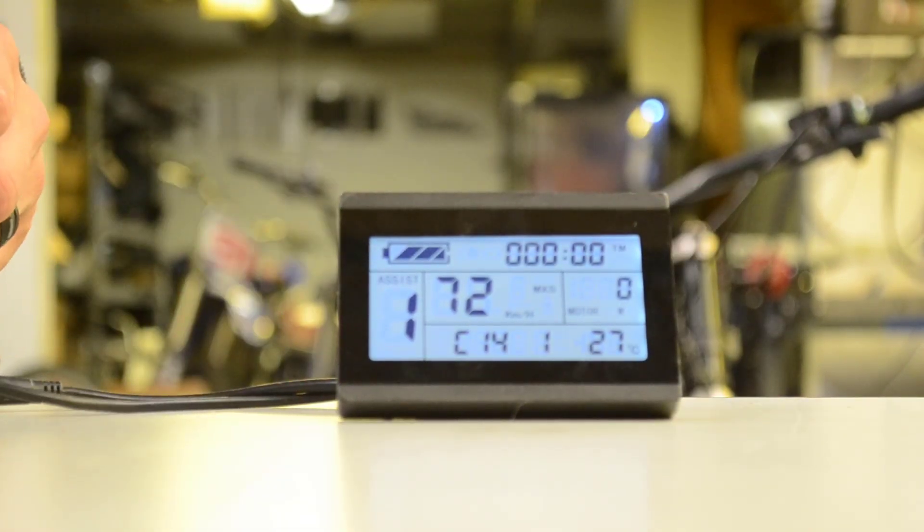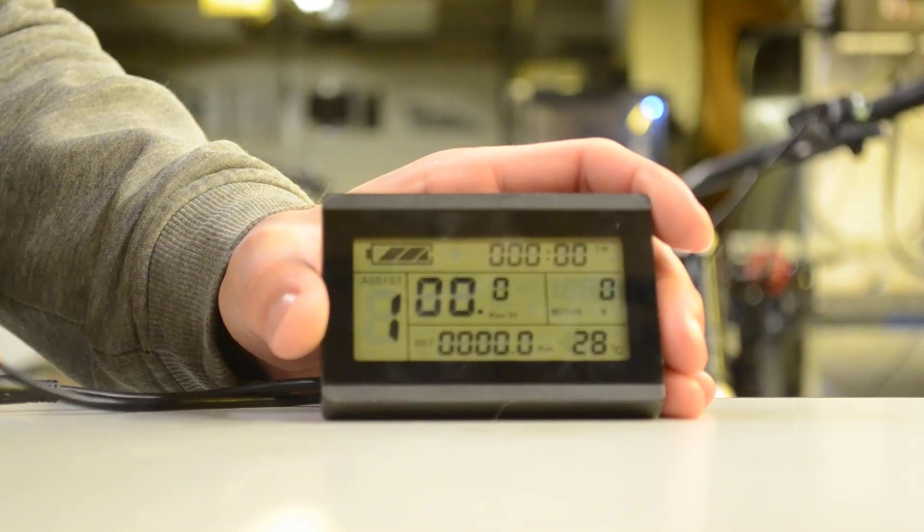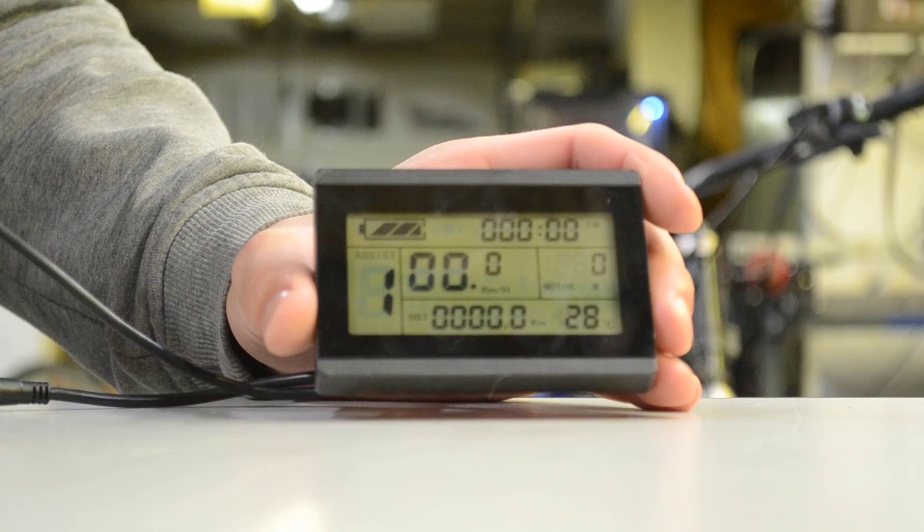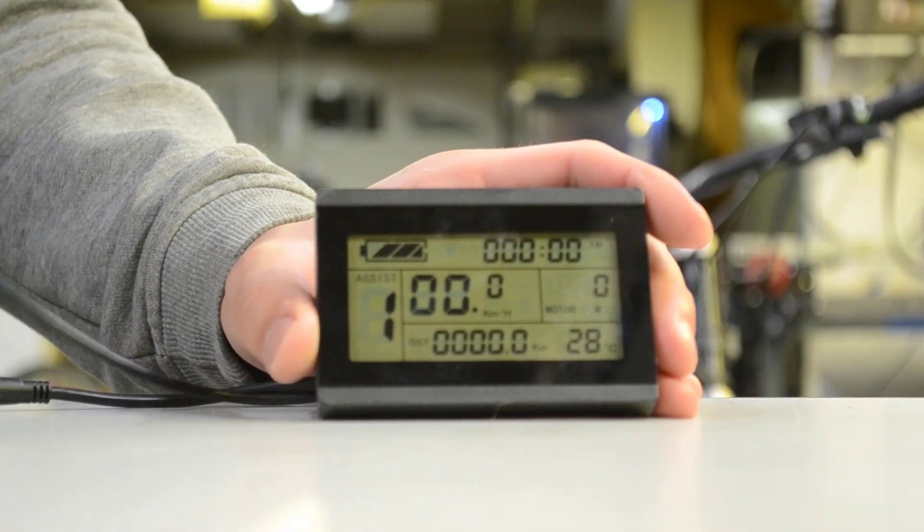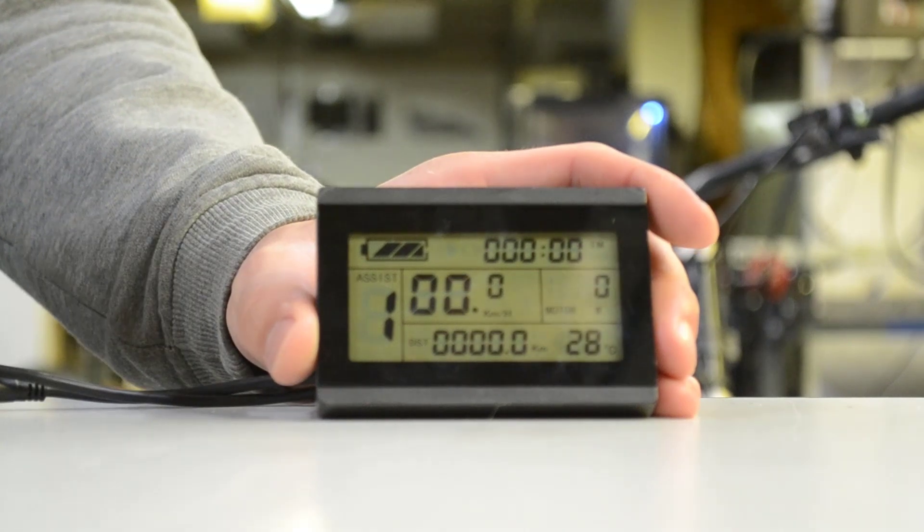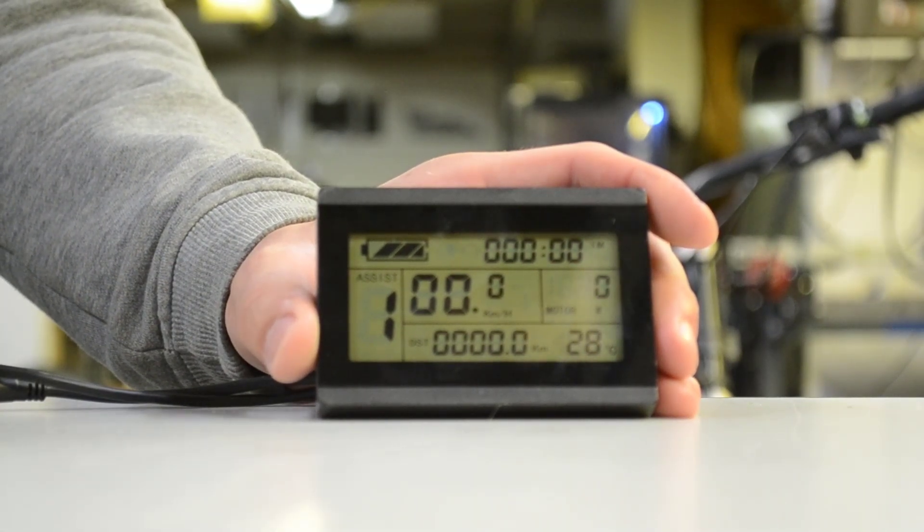So, those are all the values. Press and hold up and down, or press and hold middle button to exit. Yes, so press and hold middle button to exit. And that's a look at how to program the LCD 3 display, and it's the exact same procedure for the LCD 5, and it's even easier with the LCD 8.